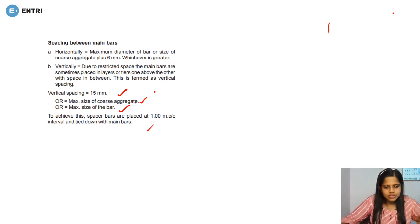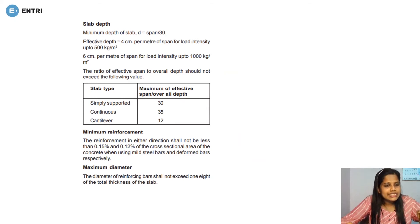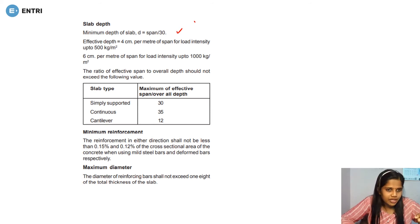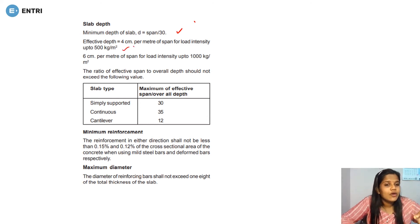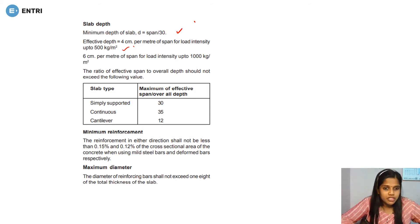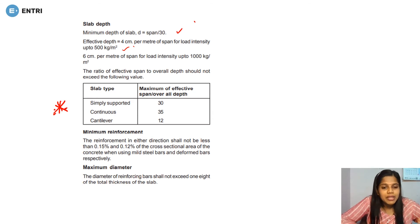For slabs, the minimum depth is span divided by 30. The effective depth is 4cm per meter of span for load intensity up to 500kg per meter square. The span-to-depth ratio for beams and slabs: simply supported is 30, continuous is 35, and cantilever is 12.